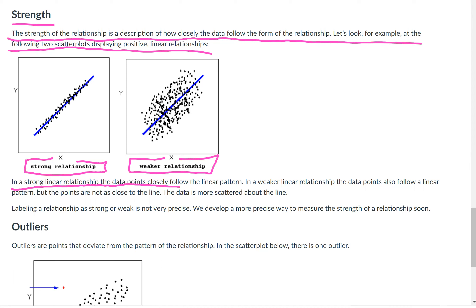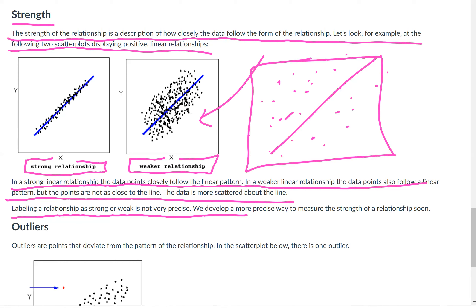In a strong linear relationship, the data points closely follow the linear pattern. In a weaker linear relationship, the data points also follow a linear pattern, but the points are not as close to the line. The data is more scattered about the line. Labeling a relationship as strong or weak is not very precise because some people might see one as weak and some might see it as strong, especially when you compare it to another. Like if I drew another one where the points were even further away from the line, but they still look fairly linear, you might actually look back at this middle one here and the second one and say, actually that one looks kind of strong compared to this one. So it's relative a lot of times, but we can make it more precise. We develop a more precise way to measure the strength of a relationship soon.